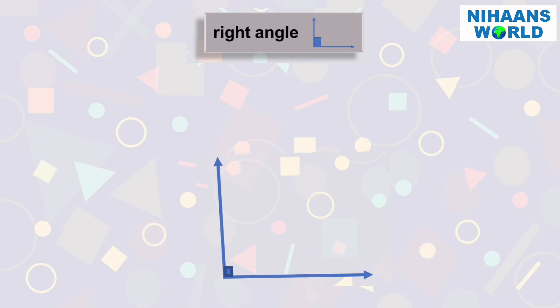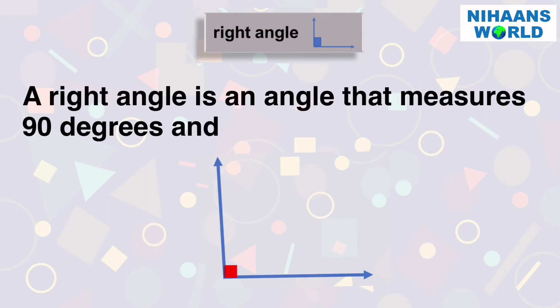What is a right angle? A right angle is an angle that measures 90 degrees and forms a square.